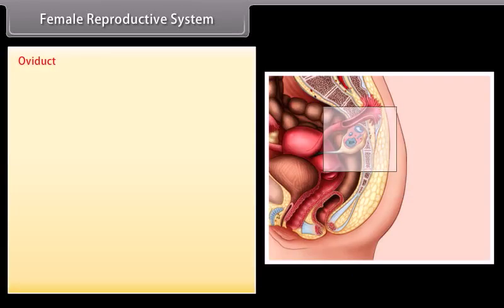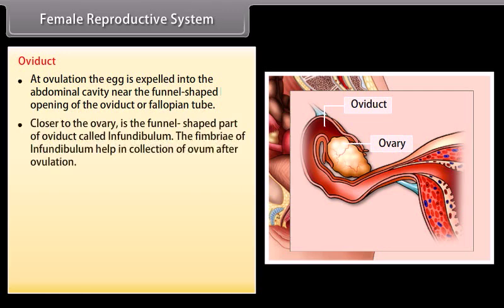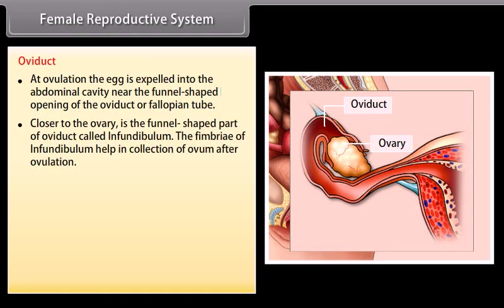At ovulation, the egg is expelled into the abdominal cavity near the funnel-shaped opening of the oviduct, or fallopian tube. Closer to the ovary is the funnel-shaped part of the oviduct called the infundibulum. The fimbriae of the infundibulum help in collection of the ovum after ovulation.